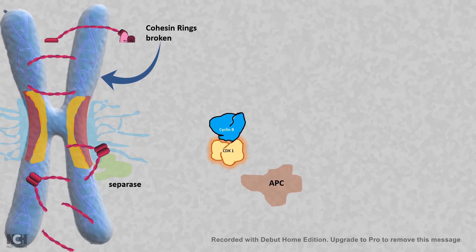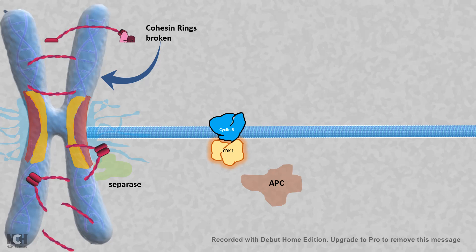Once the cohesin rings are broken, it is the proper time to pull those chromosomes apart because there is nothing holding them back.